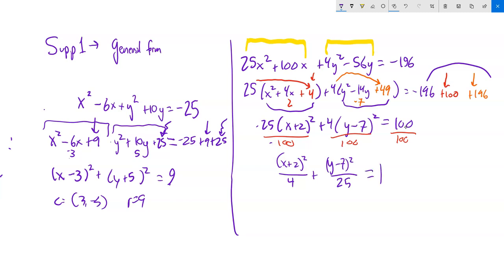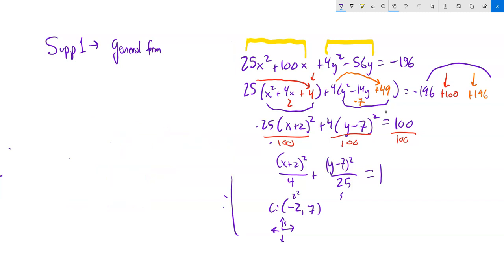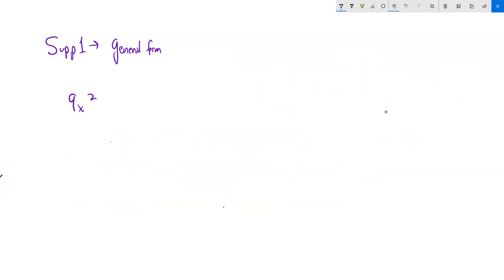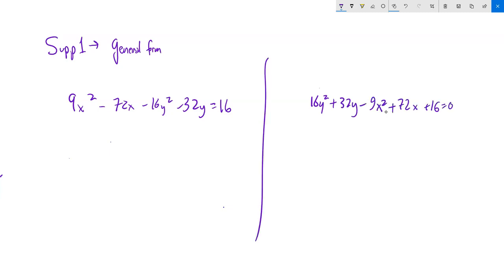I divide everything by 100 to get the standard form equal to 1. The fraction 25 over 100 reduces to 1 over 4, and 4 over 100 reduces to 1 over 25. So I have the ellipse form with center at (-2, 7), offset of 2 in the x direction and 5 in the y direction, and I can graph the ellipse. For the next example, I have a 9x squared minus 16y squared — an x squared minus y squared form, which implies a hyperbola.